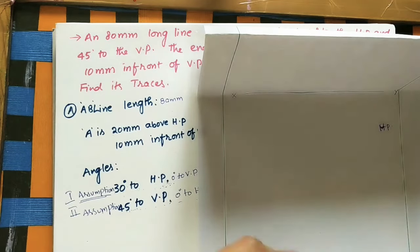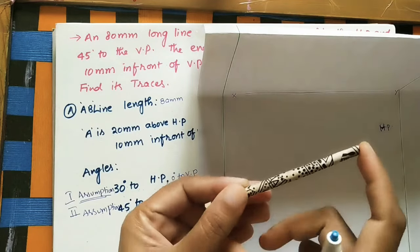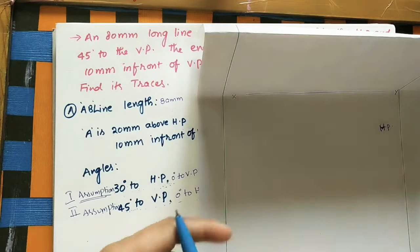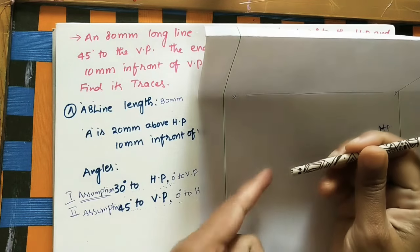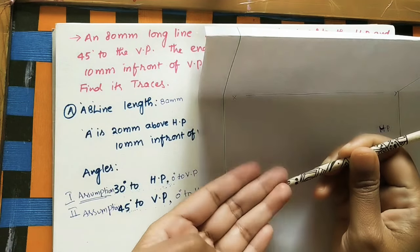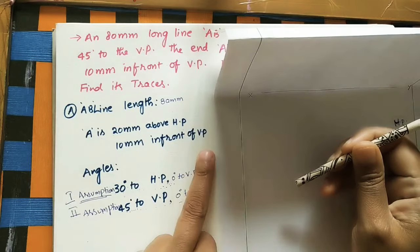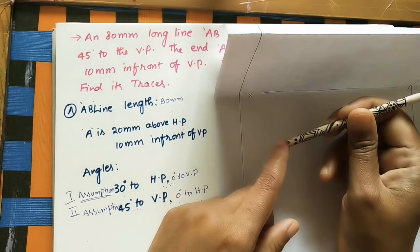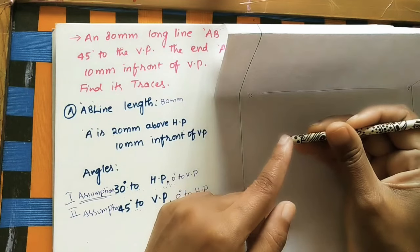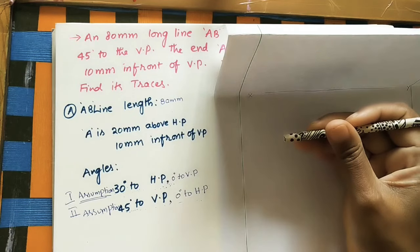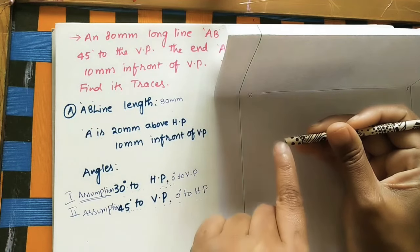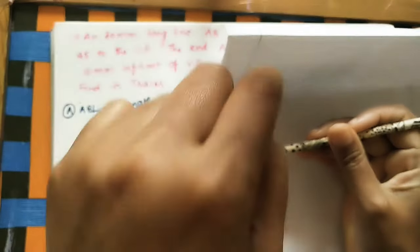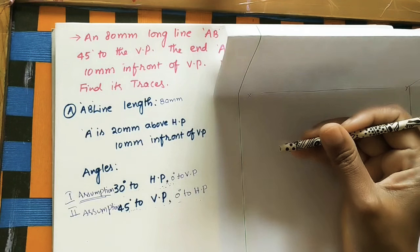This is the line AB, with A and B marked and the length 8 cm. First, we need to mark the position of A. A is 20 mm above the horizontal plane and 10 mm in front of the VP. Whatever view is seen from the front appears on the vertical plane — that is the front view. Whatever view comes from the top appears on the horizontal plane — that is the top view.